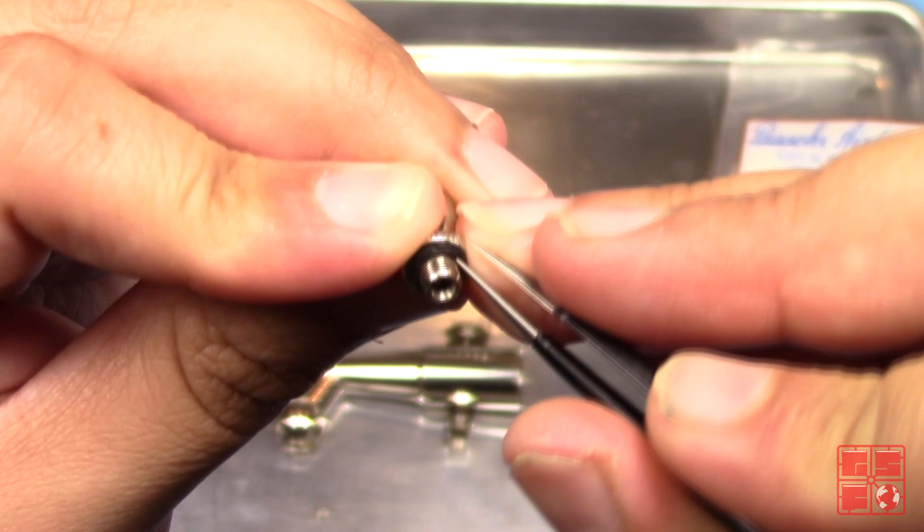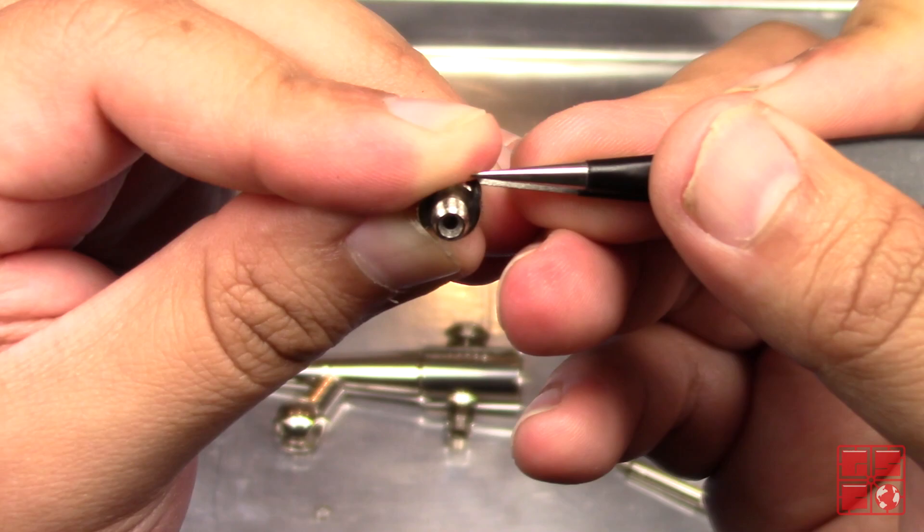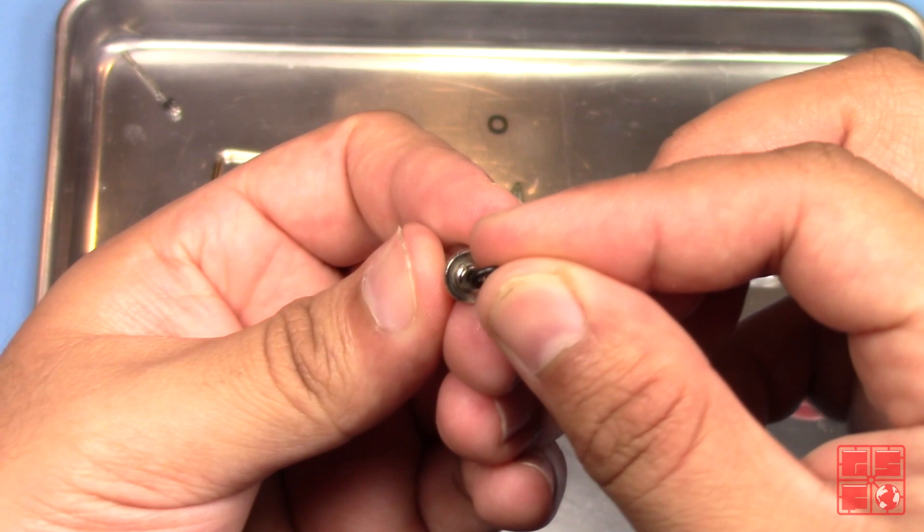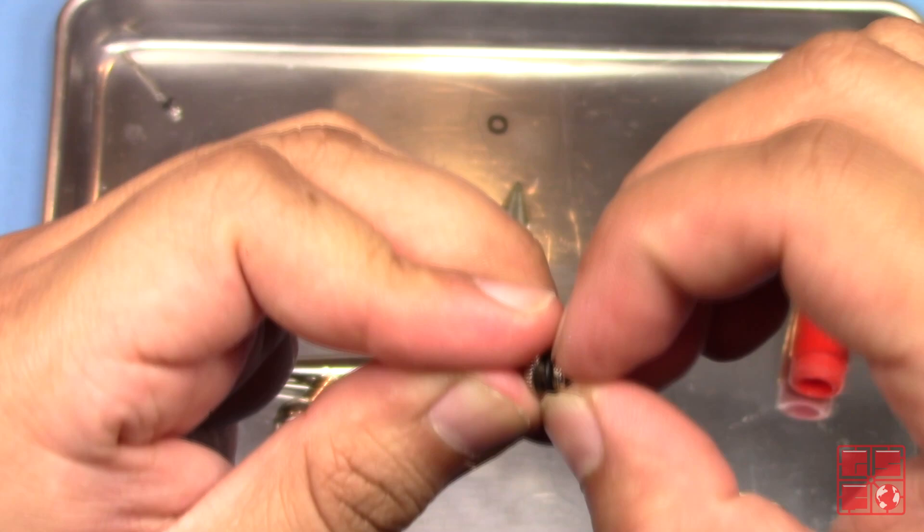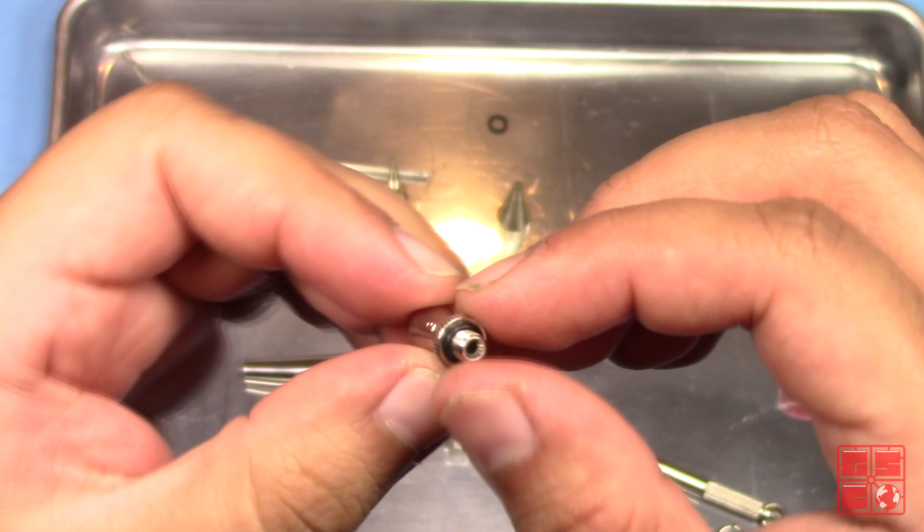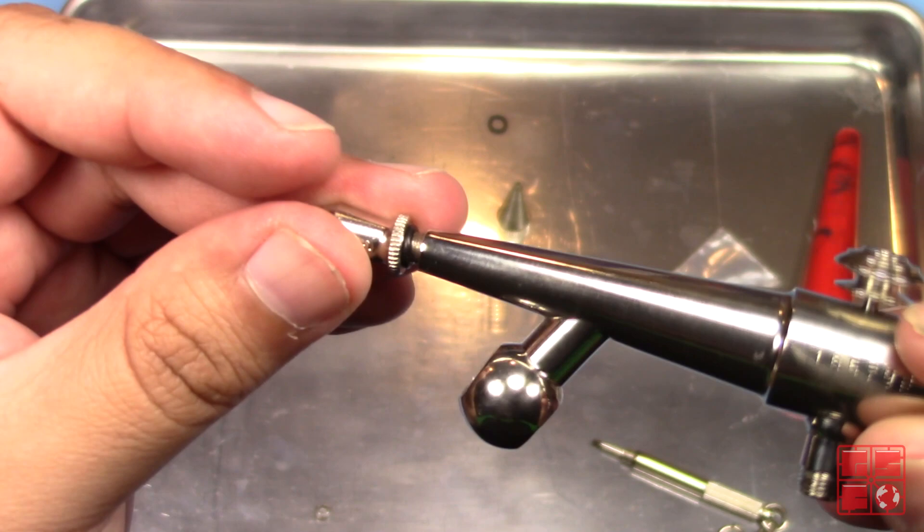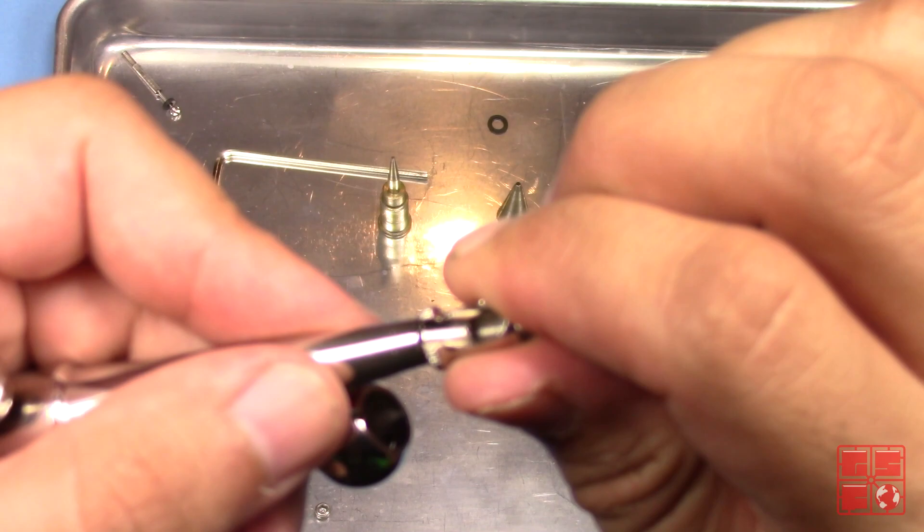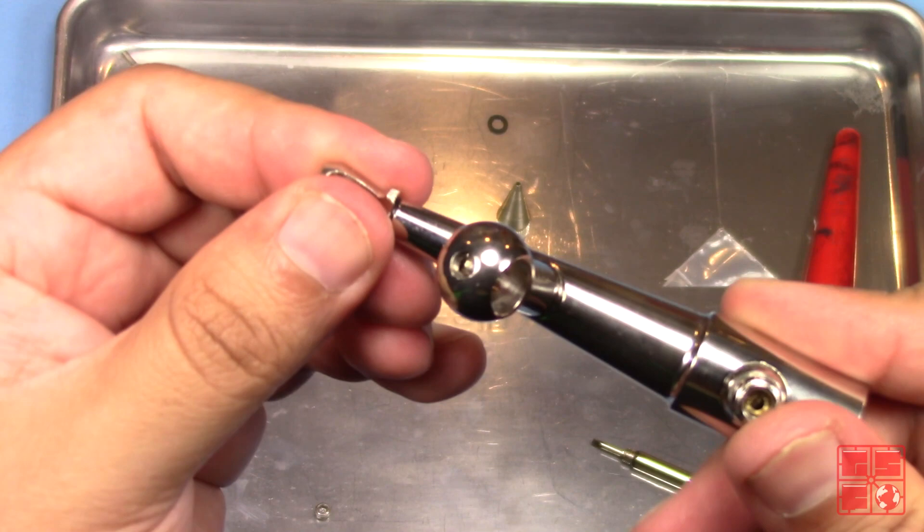Next, I remove the old air cap o-ring and replace it with a fresh one. Screw and hand tighten the air cap on the airbrush body. Then back it off so that the opening lines up with the nozzle path.